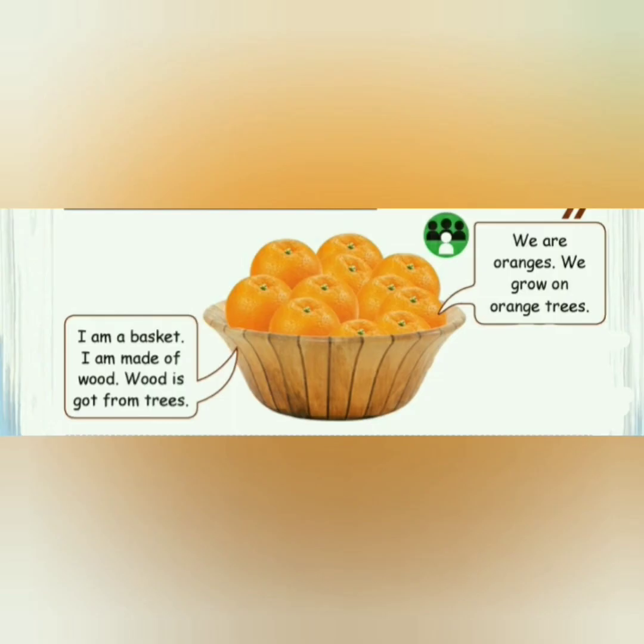Look at the picture. What can we identify here? Oranges kept in a basket. We grow oranges on trees. But what about the basket? The basket is made up of wood, and we get wood from trees.